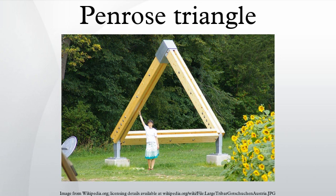If a line is traced around the Penrose Triangle, a three-loop Möbius strip is formed.